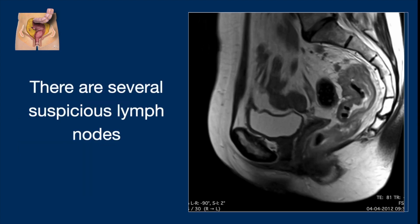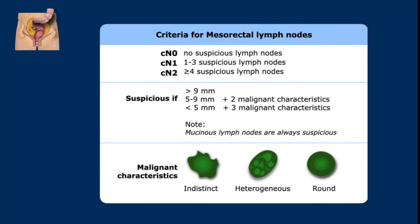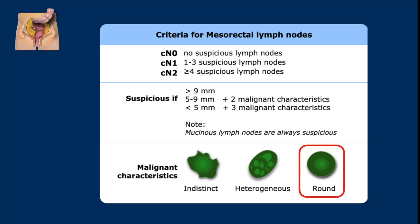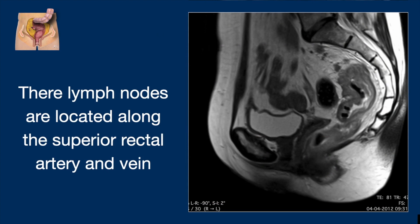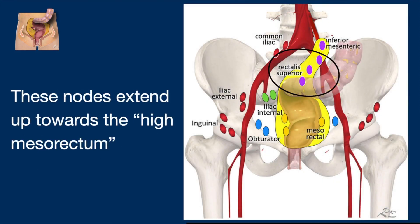Now let's look at the lymph nodes. There are several suspicious lymph nodes here. The criteria for mesorectal lymph nodes are as follows: look for malignant characteristics like indistinct border, or when the lymph node is heterogeneous or round. When you have these three malignant characteristics, even nodes smaller than 5 millimeters are very suspicious. With only two malignant characteristics, nodes between 5 and 9 millimeters short axis are suspicious, and all nodes larger than 9 millimeters. All mucinous lymph nodes are always suspicious. These nodes are located very high along the level where the superior rectal artery and vein are located, which is important information for the surgeon, as they are sometimes not resected in standard total mesorectal excision.